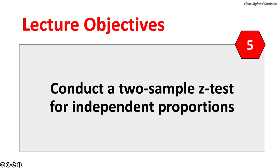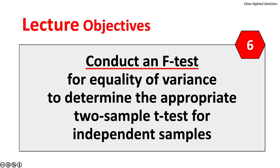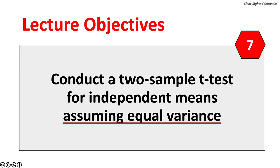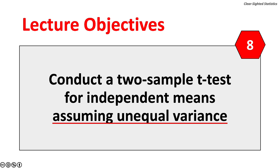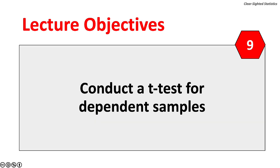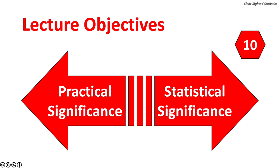Fifth, conduct a two-sample z-test for independent proportions. Sixth, conduct an F-test for equality of variance to determine the appropriate two-sample t-test for independent samples. Seventh and eighth, conduct a two-sample t-test for independent means assuming equal variance, and one assuming unequal variance. Ninth, conduct a t-test for dependent samples. Tenth, discuss practical and statistical significance.